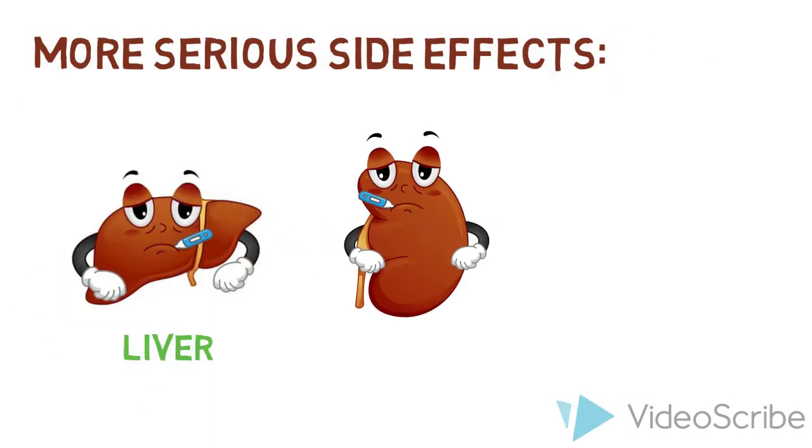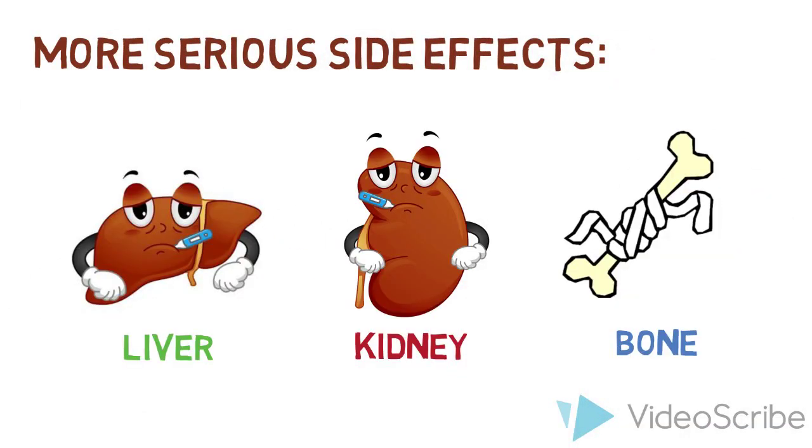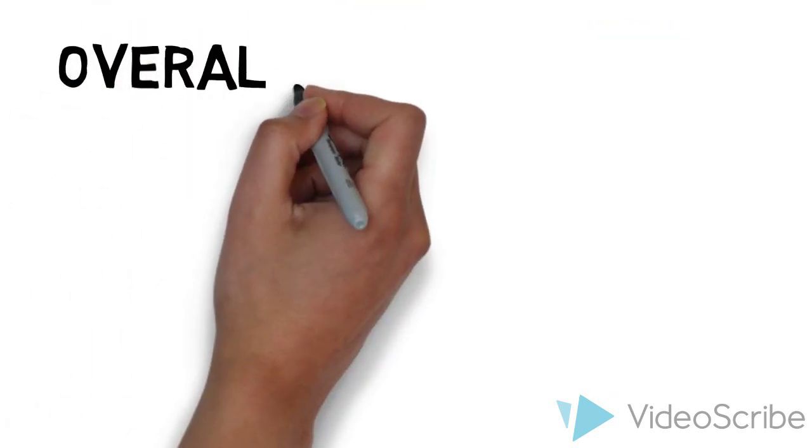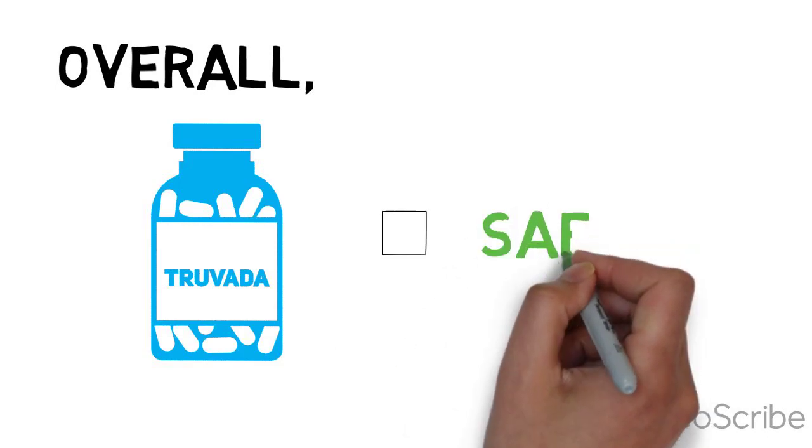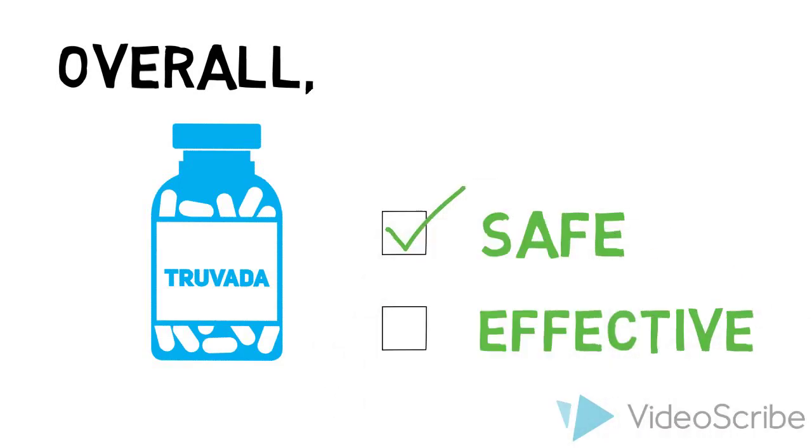The more serious side effects include liver problems, kidney damage, and bone problems, although these effects were rarely observed in clinical trials. Overall, Truvada for PrEP has proven to be relatively safe and effective.